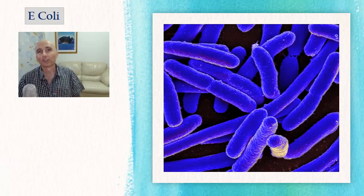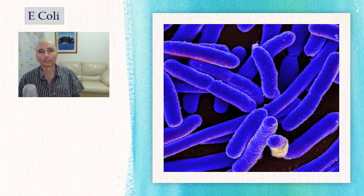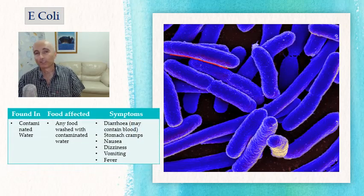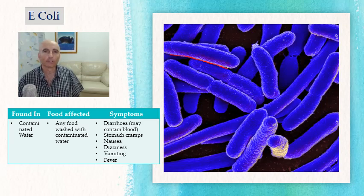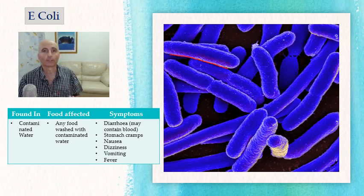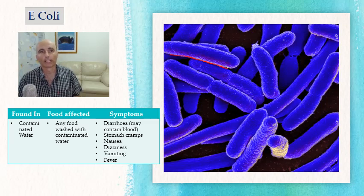Our next bug is E. coli, which is actually found in contaminated water — note the long rod shape under the microscope. Foods affected are generally anything washed in contaminated water. Symptoms include diarrhea, stomach cramps, nausea, dizziness, and usually a fever. To prevent this: wash your hands thoroughly, always cook your meat thoroughly, and avoid swallowing water when swimming in dams or lakes.